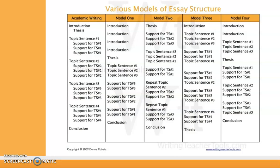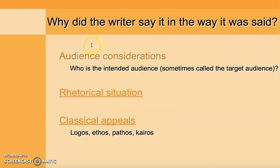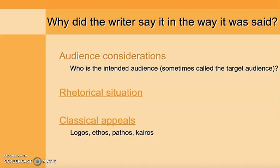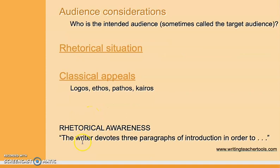When thinking about rhetorical awareness — why the writer said what was said in the way it was said — we always want to think about the intended audience. We want to think about the rhetorical situation: where did the article appear, who is the writer writing to, when was it written, what's the primary frame? And then the classical appeals of logos, ethos, and pathos — I've linked to a document here. A sentence indicating rhetorical awareness might be something like 'the writer devotes three paragraphs of introduction in order to...' — really understanding why the writer did that.